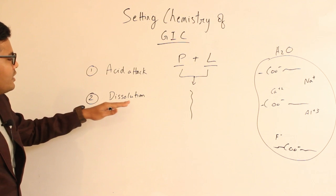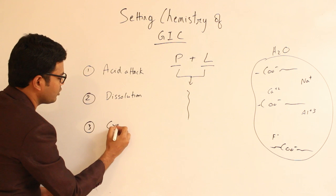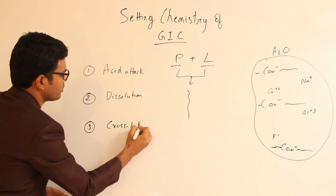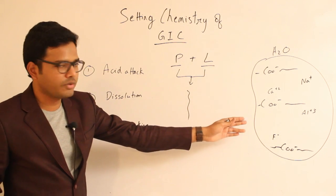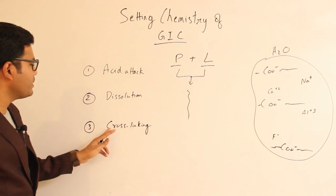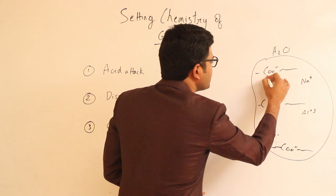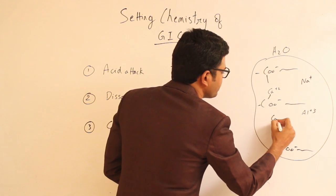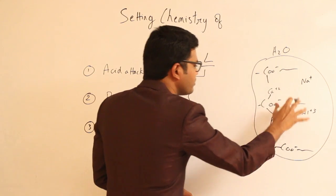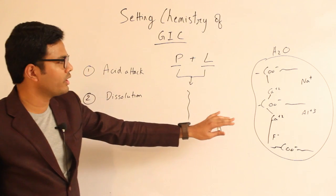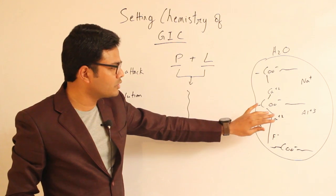After dissolution, we have the cross-linking phase. Once ions are released into the reaction medium, they help in cross-linking of the polyacrylic acid chains. Carboxylic acid chains are cross-linked with calcium. This cross-linking is very important as it imparts strength and integrity to the set cement.